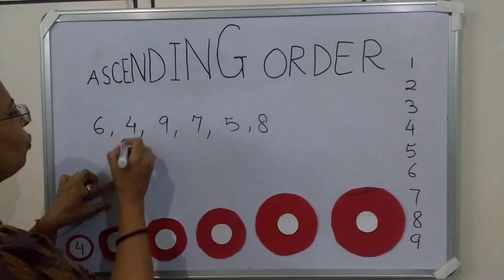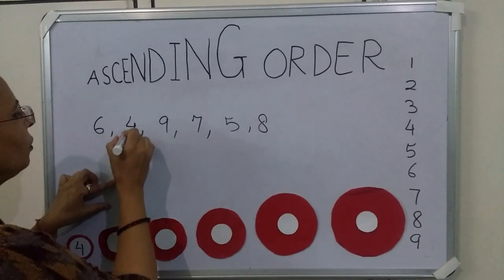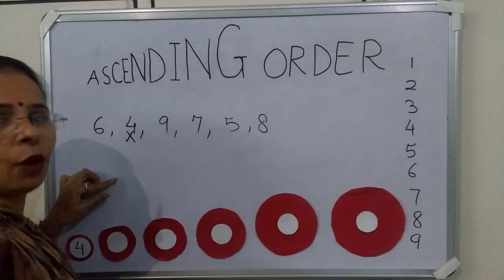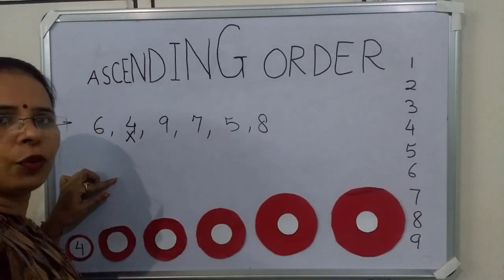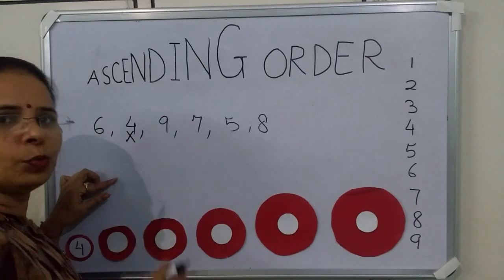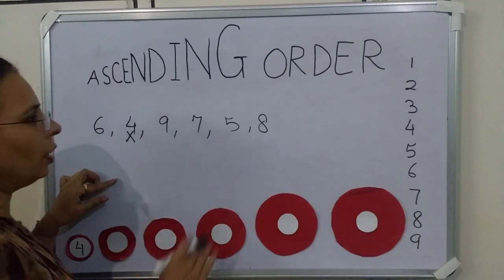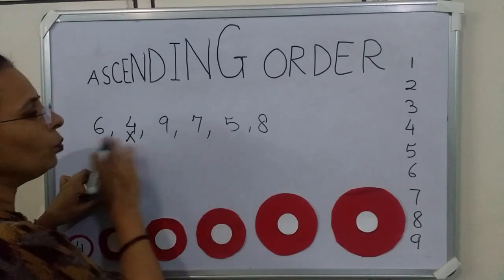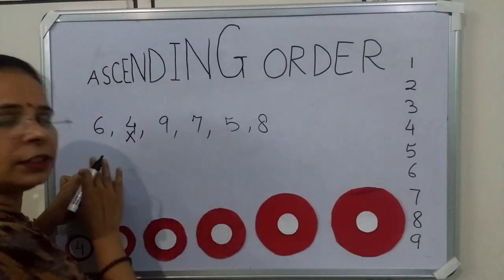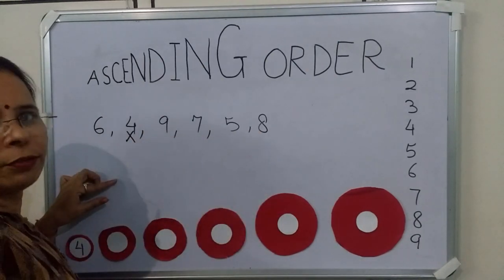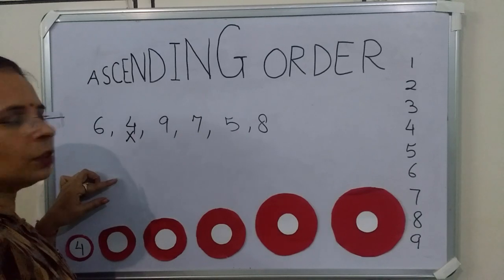So 4 we have written and we cut it. Now we have to find the smallest number from these 5 remaining numbers.